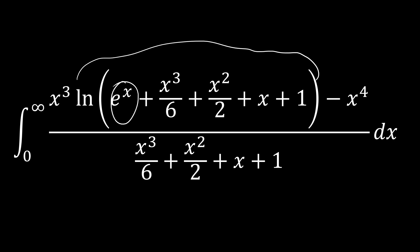Next, we can see that we have this kind of weird function right here: x cubed over 6, plus x squared over 2, plus x plus 1. The key thing to notice here is that we can rewrite this as the sum from n equals 0 to 3 of x to the n over n factorial.